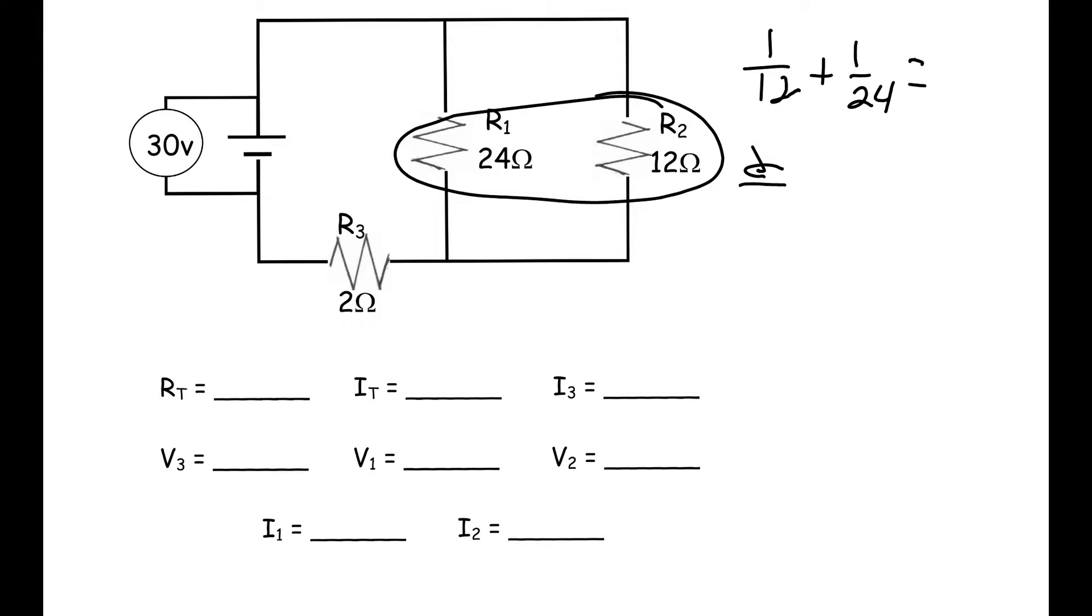Let me try that again. We have to change this to 2 over 24 plus 1 over 24, and that's equal to 3 over 24. That's going to be reduced down to 1 over 8. 3 goes into 24 eight times, so this is 8 ohms for this first section.